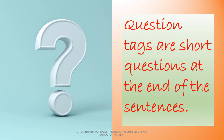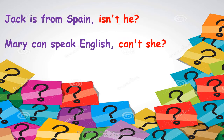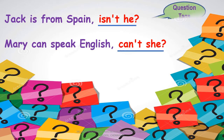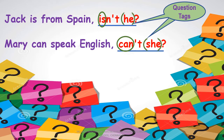What are question tags? Question tags are short questions that usually come at the end of statements. Have a look at these statements: 'Jack is from Spain' and 'Mary can speak English.' What do you find at the end of these statements? You find 'isn't he' and 'can't she.' These are the short questions called question tags, and they always begin with an auxiliary verb or a modal verb followed by a subject pronoun.